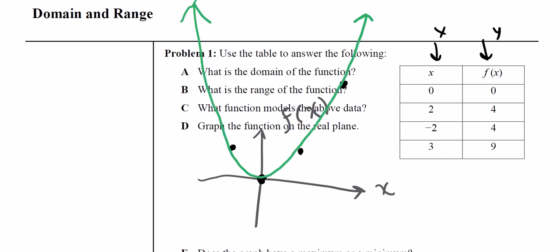If we connect those, we're going to get this graph. This is called a parabola. And this is the graph of a quadratic. So this is the graph, part d, of the function that we came up with in part c, based on the domain and range from parts a and b.